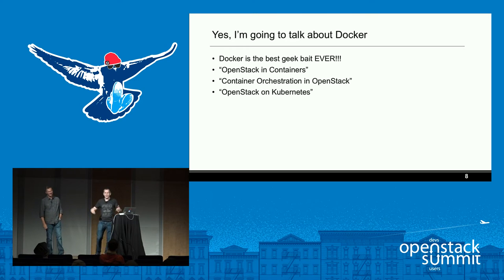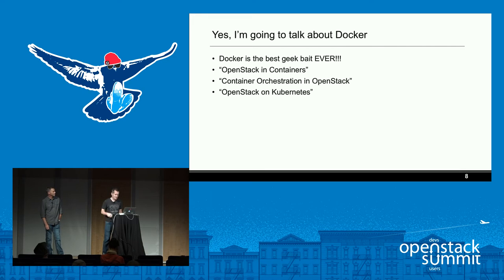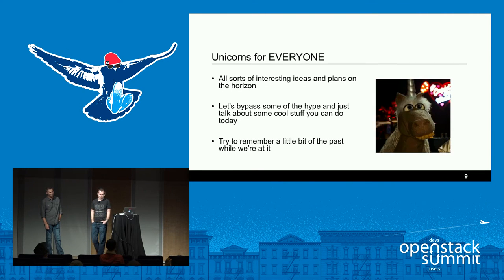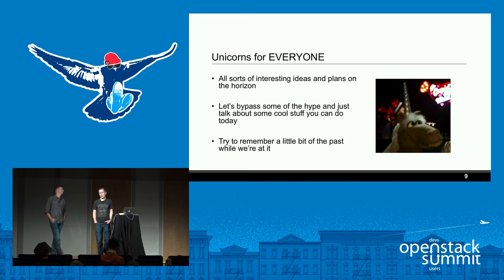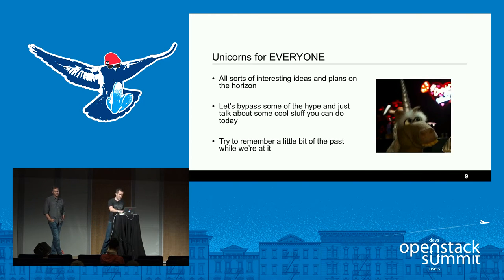Docker is great geek bait. You can put containers on OpenStack, do container orchestration around OpenStack with Magnum and Kubernetes. I'm going to try to do a Mesos demo with Docker at the end. There are interesting ideas around Kolla, Magnum — how to use containers to deploy OpenStack and how to have OpenStack consume containers. But let's bypass a little of the hype and do some cool stuff.